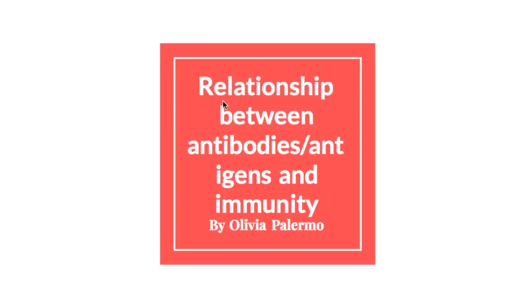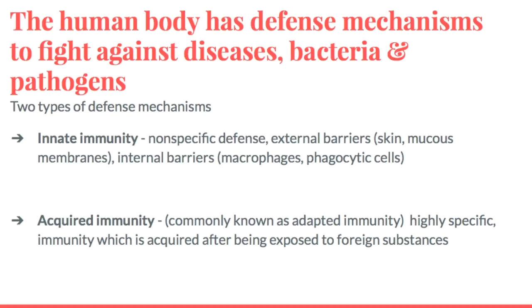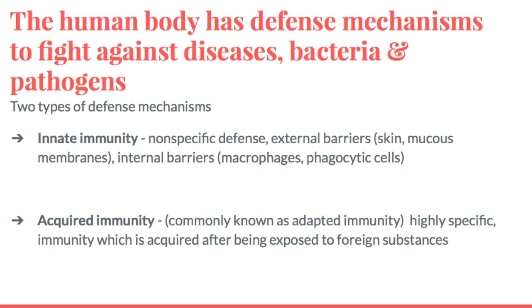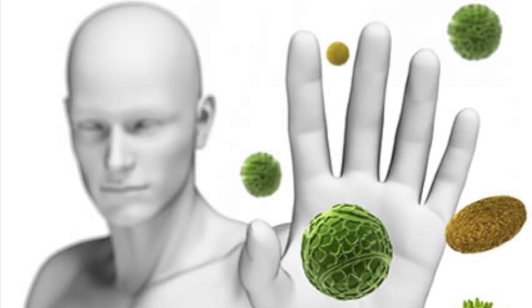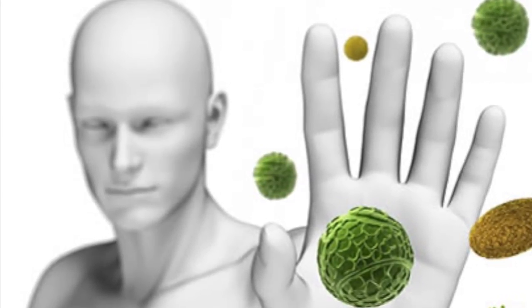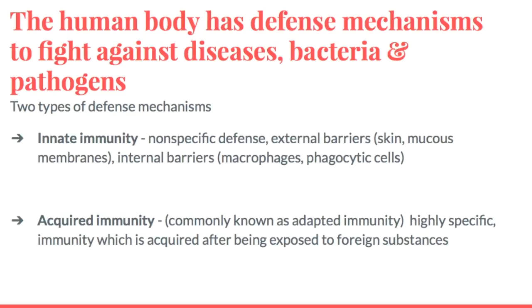Today we are going to be talking about the relationship between antibodies, antigens, and immunity. The human body is exposed to bacteria all day, every day. Everything we touch contains bacteria, so in order for a body to fight these off, they have to have defense mechanisms. The two types of defense mechanisms are innate immunity and acquired immunity. Innate immunity is nonspecific, so it fights off as many different types of diseases and bacteria as possible, trying to fight off anything that is foreign to the body.